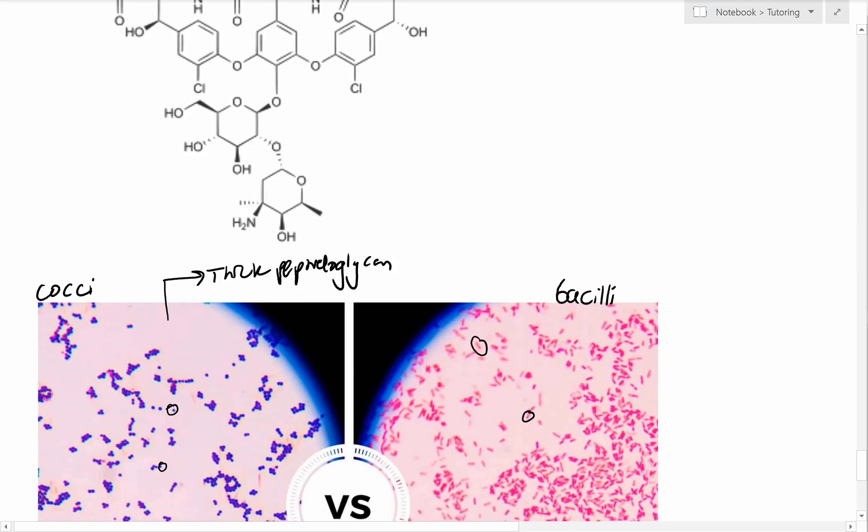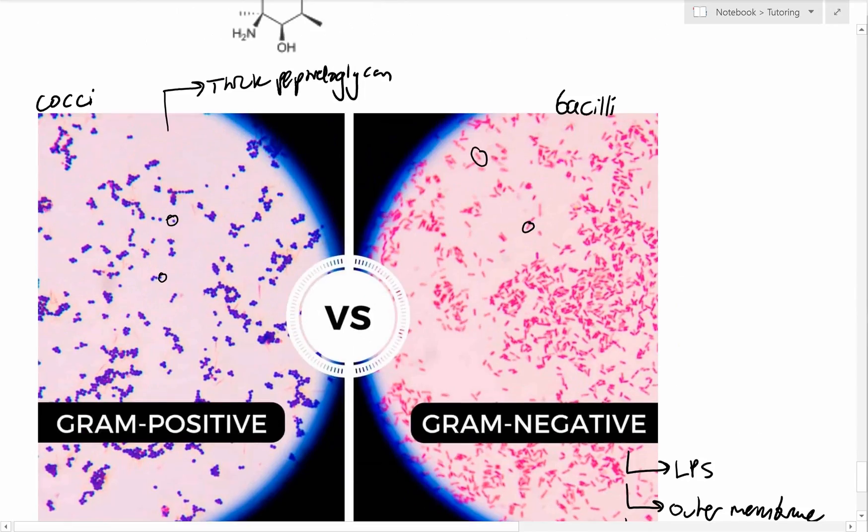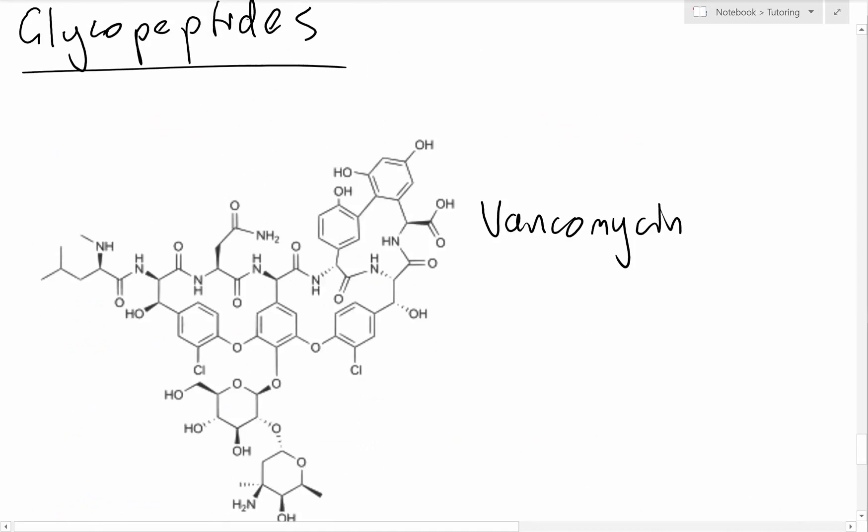An important thing about vancomycin is that vancomycin can actually only work on gram-positive cells. These guys here with the thick peptidoglycan wall. That's because you can see here it's a very large molecule and it's also got a lot of charges on it. It's got a very high charge density. We've currently shown it with all the hydrogens and things attached to the hydroxyl groups, but in reality if this is dissolved in a liquid medium it's going to be ionized. You're going to have a very high charge density. All of these are going to have ions on them. You might have negative charges forming around your carbonyl groups, all that kind of thing. That's going to prevent it from crossing the lipid membrane that we see, the outer membrane in gram-negative cells. So vancomycin in particular only works on gram-positive.